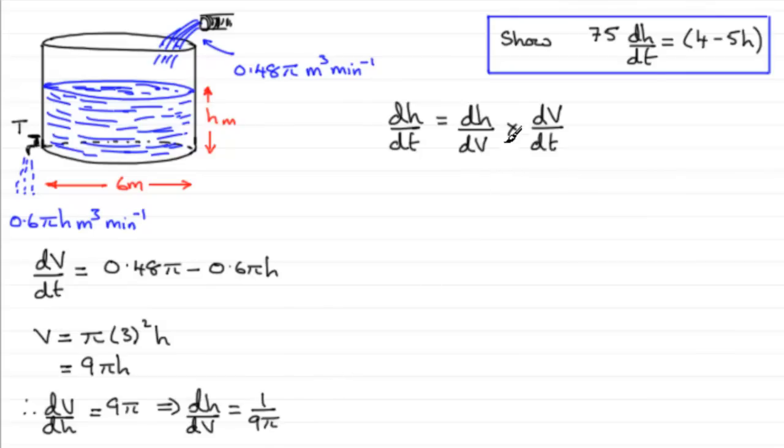So when I put in these two rates of change into this equation here, for dh by dV then we've got 1 over 9π, and we multiply this by dV by dt. So we just put that in brackets as 0.48π minus 0.6πh.